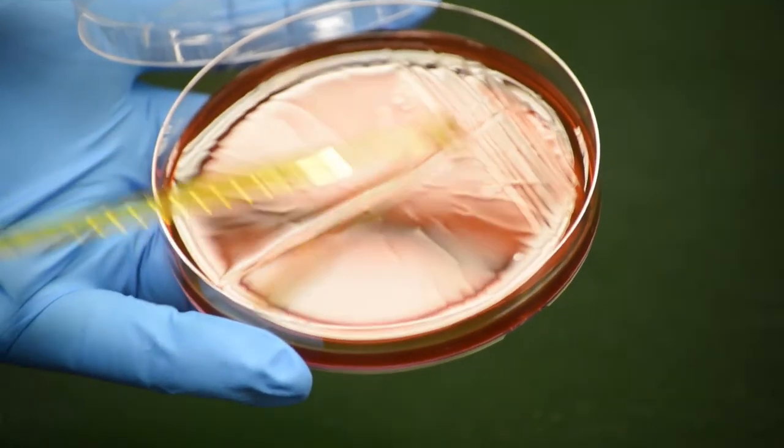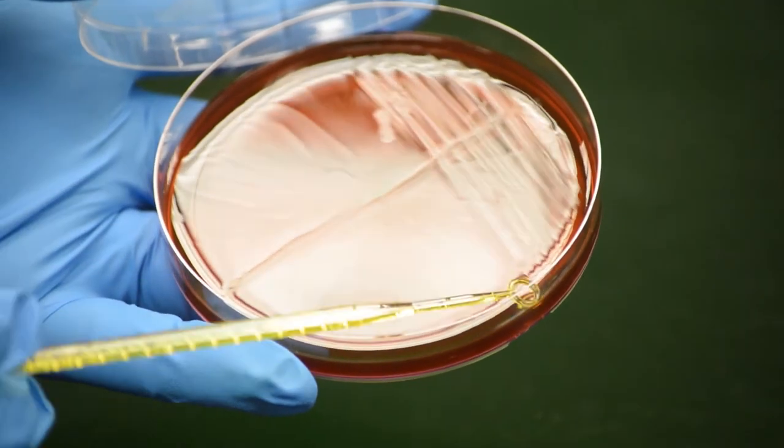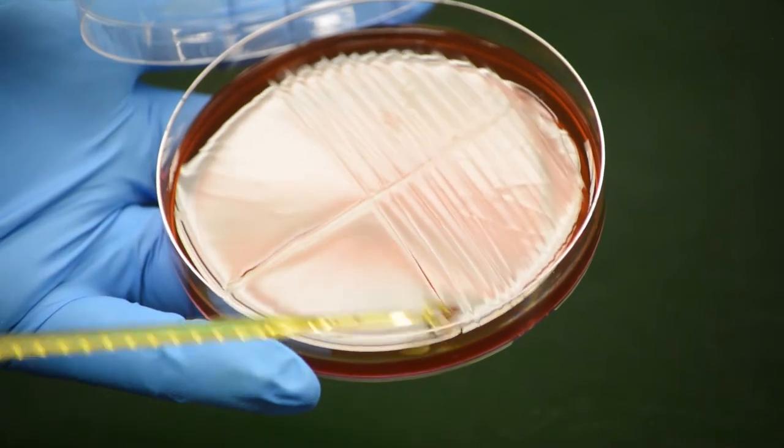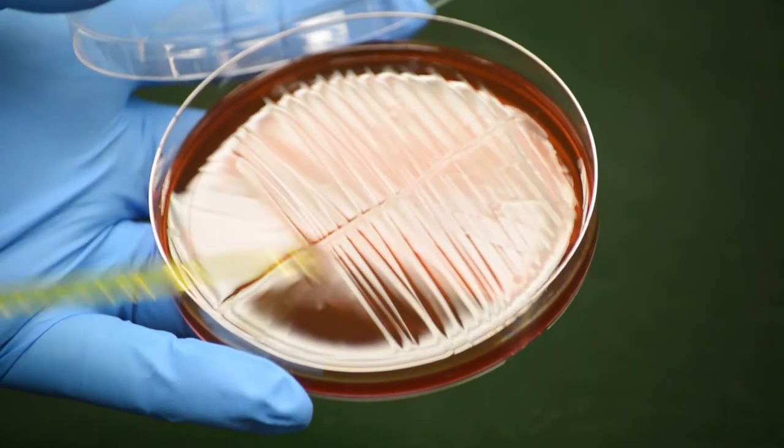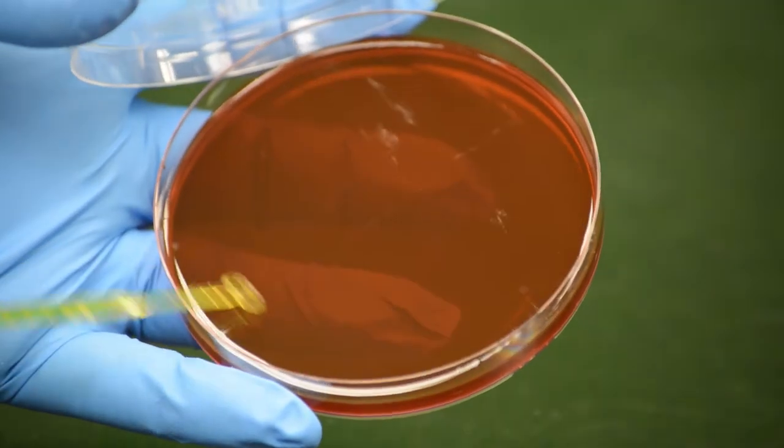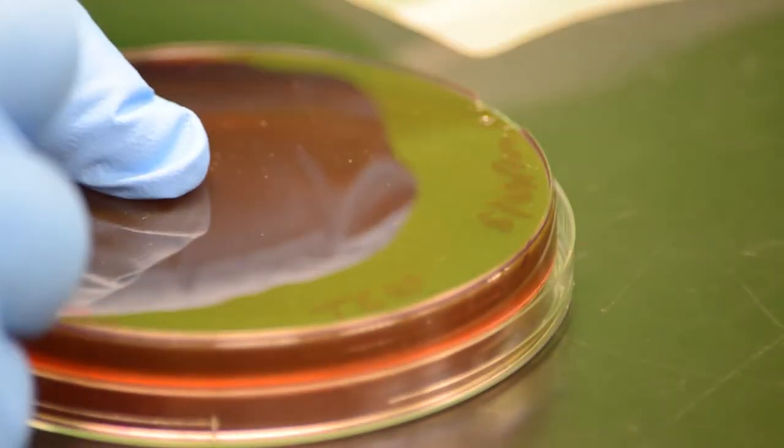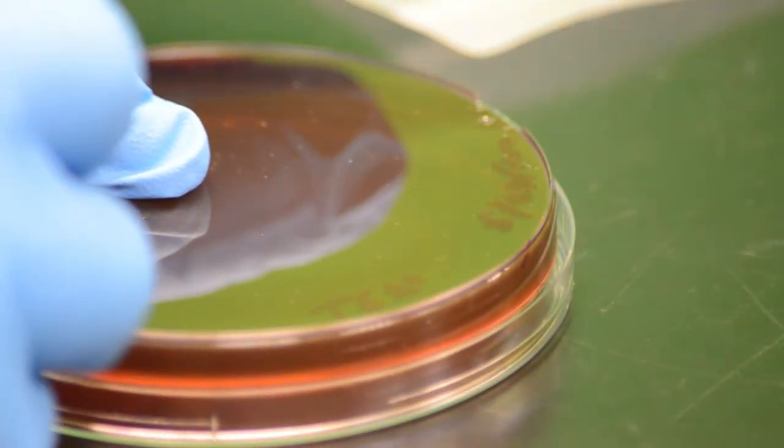From the end of the vertical streak, streak from side to side moving down the streak about 15 times. Follow the pattern shown in the video. Label and seal the inoculated petri plate, then store the plate in an inverted position.